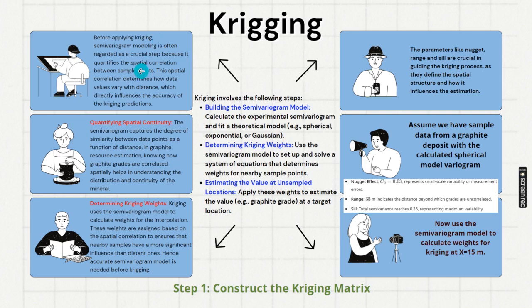Before applying kriging, semi-variogram modeling is often regarded as a crucial step because it quantifies the spatial correlation between sample points. That spatial correlation determines how data values vary with distance, which directly influences the accuracy of the kriging prediction. As I told, with distance somewhere, suppose grade is increasing. But how long? With distance, infinite distance if we go, after a certain distance there will not be any relationship.